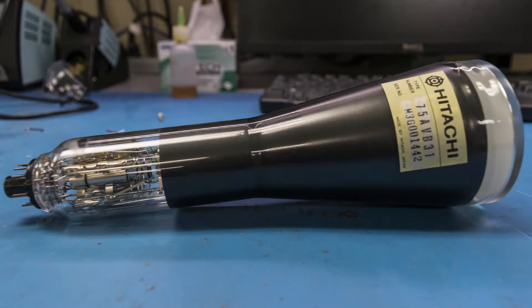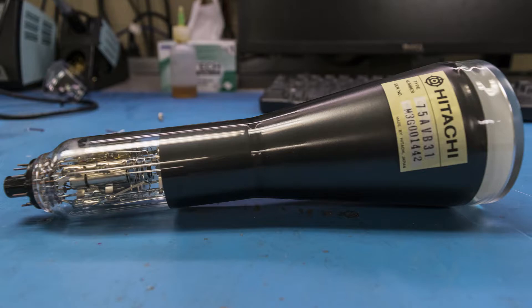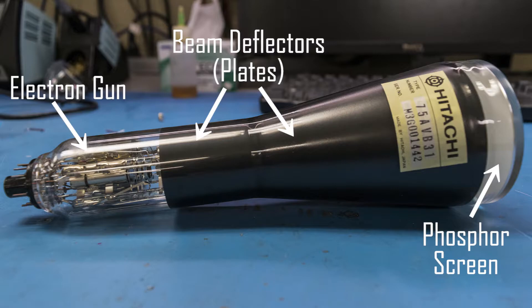So I took some still images of this cathode ray tube, and this way we can take a closer look at its components and how it functions. This cathode ray tube consists of three major sections: the electron gun, the beam deflectors, and the phosphor screen.